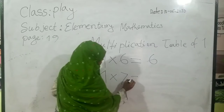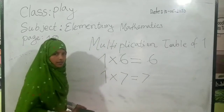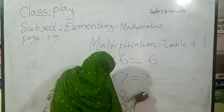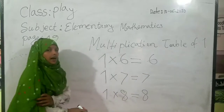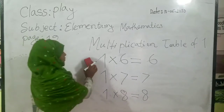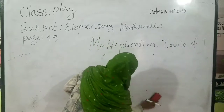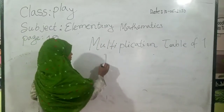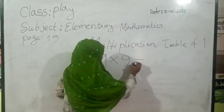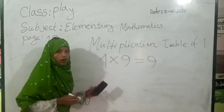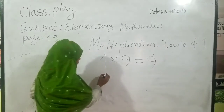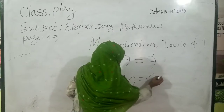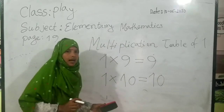One seven's are seven. One eight's are eight. One nine's are nine. One ten's are ten.